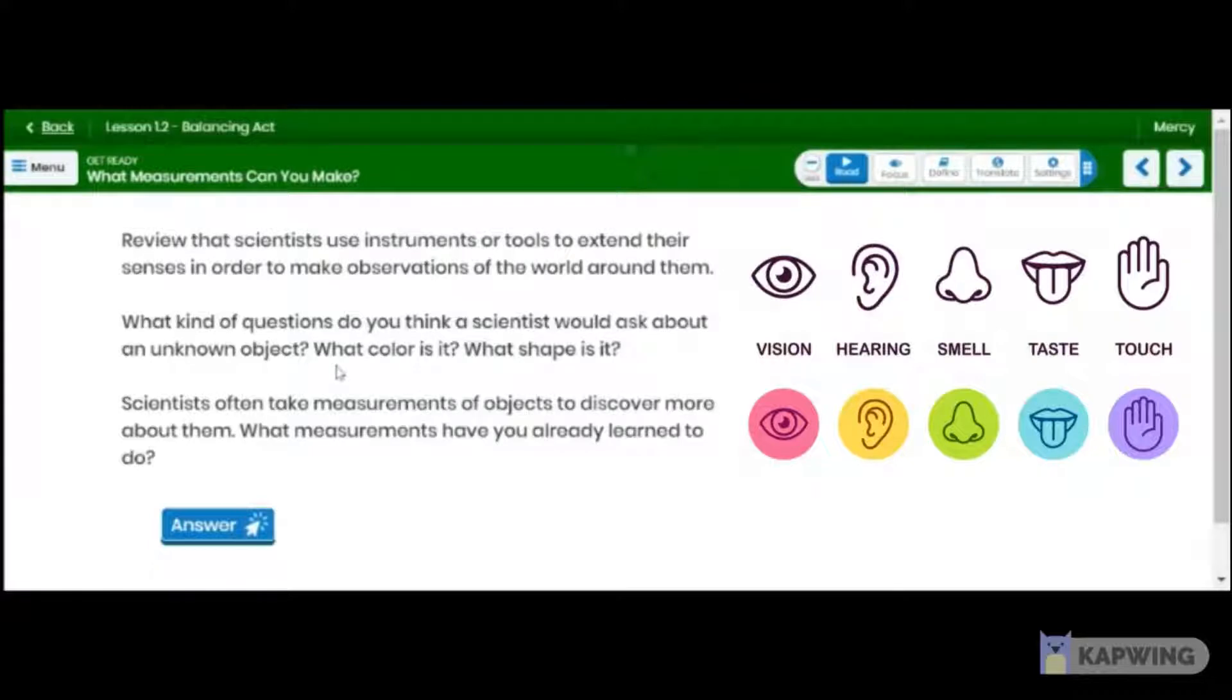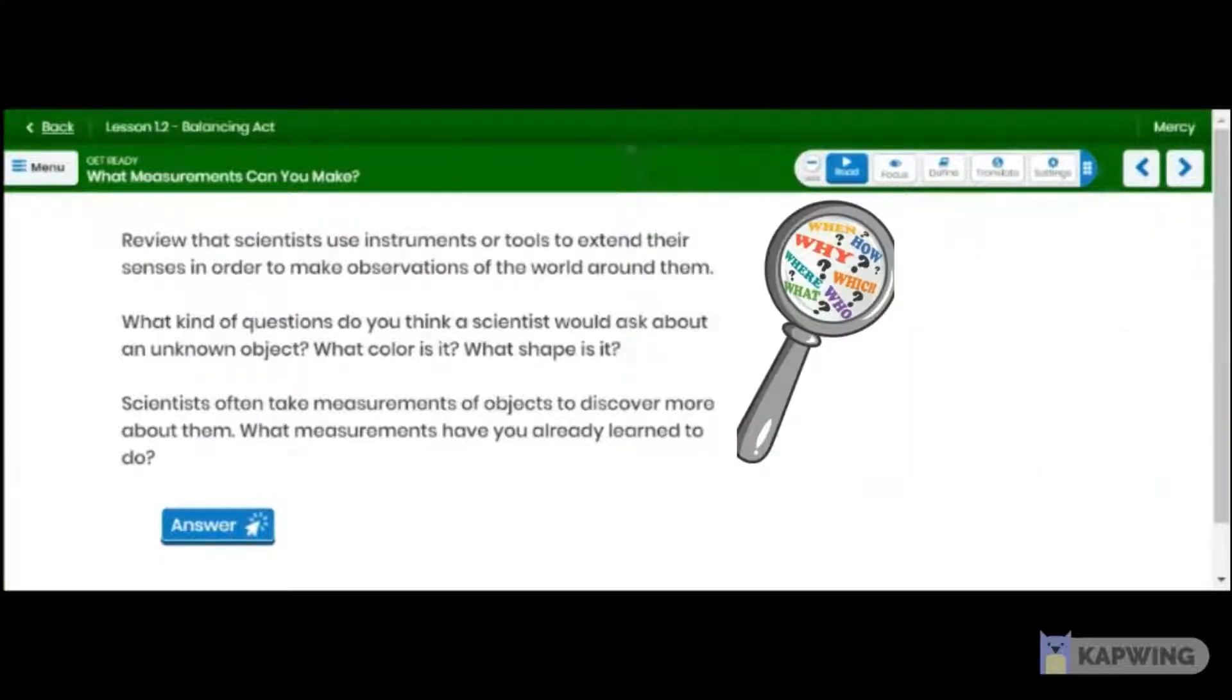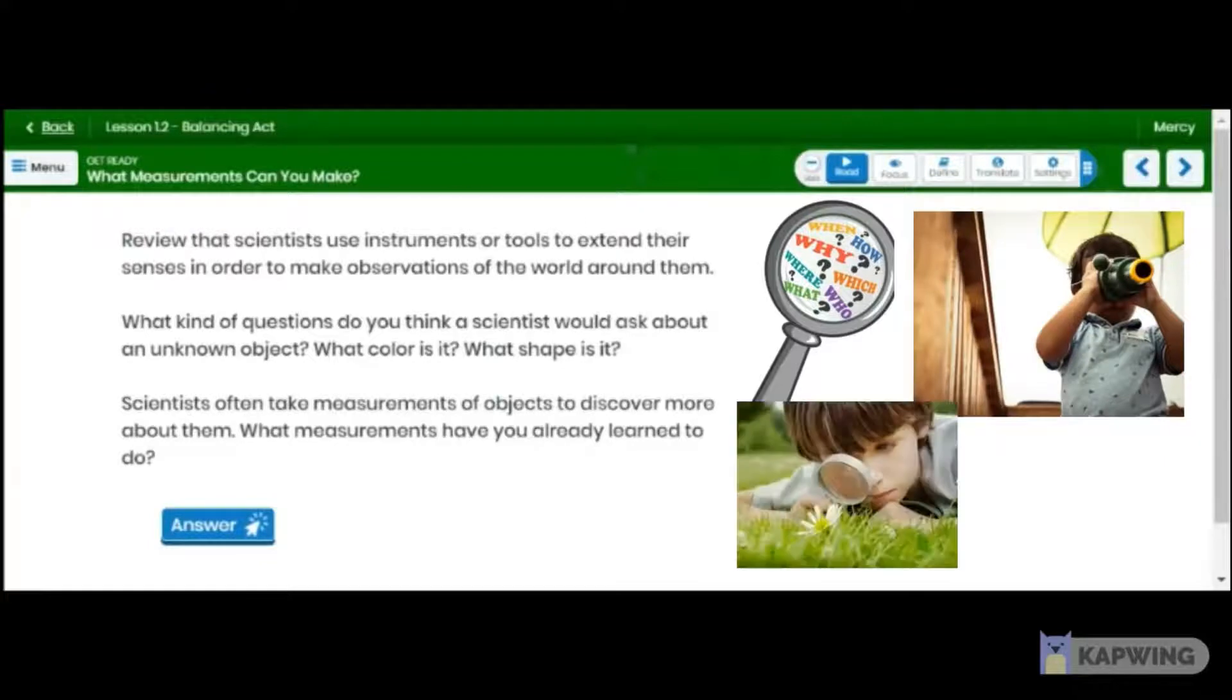Yeah, so there are five senses in no particular order. Seeing, sight, that's one sense. And then hearing, that's another sense. And then smelling, that's yet another sense. And then tasting, and then touching. So scientists, they use all of these senses to make observations of the world around them.